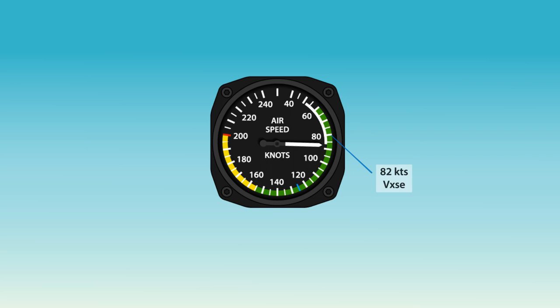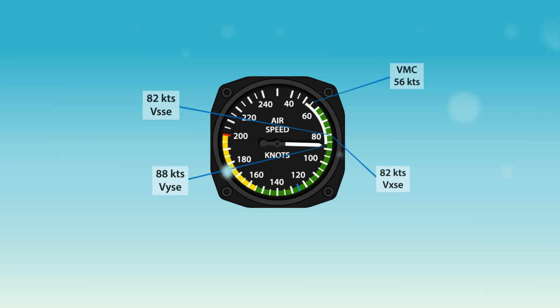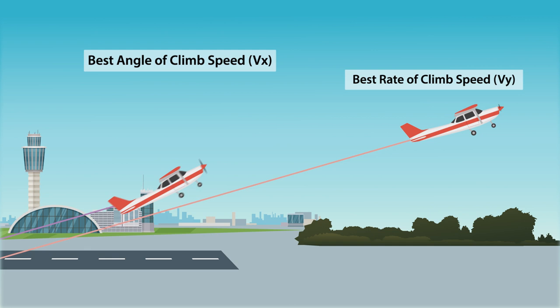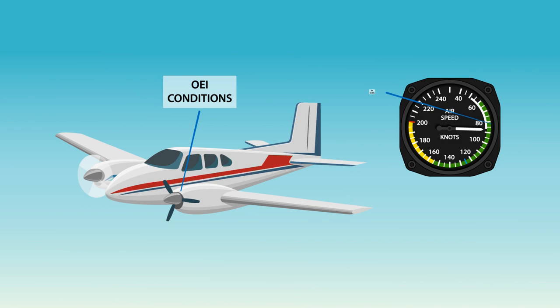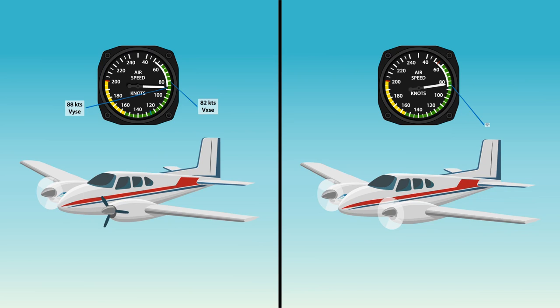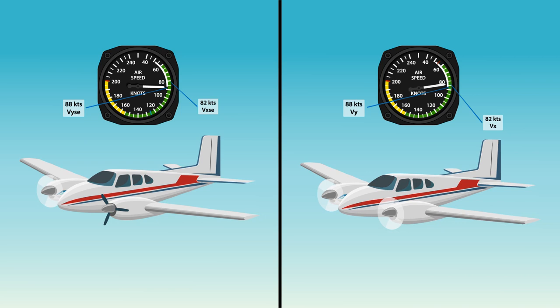These are VXSE, VYSE, VSSE, and VMC. Single-engine pilots are already familiar with VX and VY, which are best angle of climb speed and best rate of climb speed respectively. Multi-engine aircraft operation includes additional VX and VY speeds for OEI conditions. These are VXSE and VYSE, which are differentiated by the additional SE notation, which is short for single-engine.